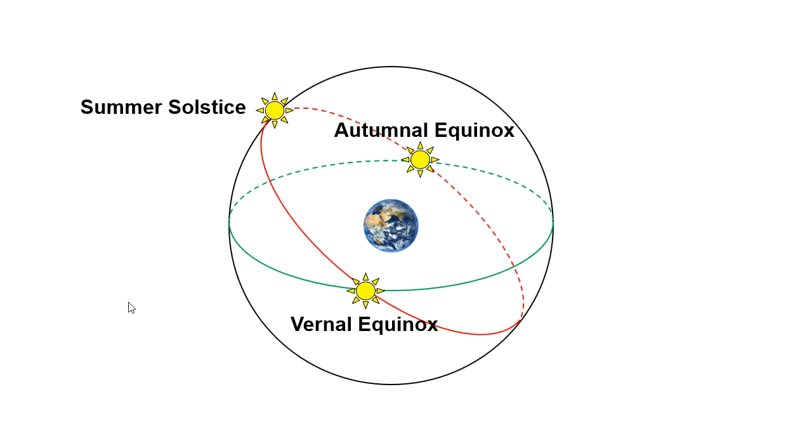The other intersection point occurs on the first day of fall. I think it's around September 22nd or so. The first day of fall. And on this day, you also have 12 hours of daylight and 12 hours of darkness. On the summer solstice, it's not that way. You have more than 12 hours of daylight and less than 12 hours of darkness.